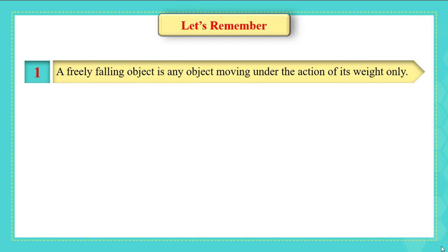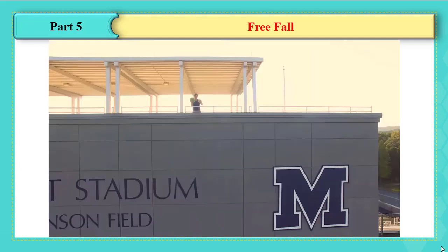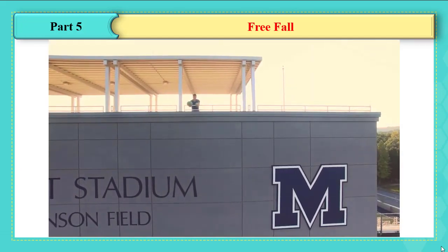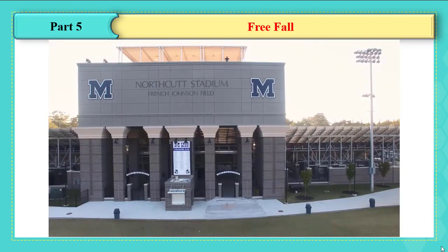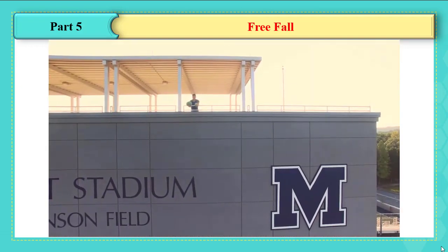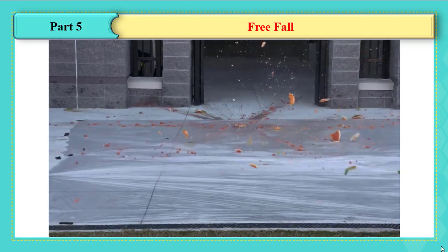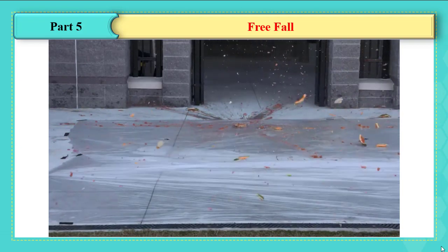Remember from the last video: a free falling object is any object moving under the action of its weight only, and in a freely falling object the motion doesn't depend on the mass or shape of the object. We'll watch a short clip where a man released a watermelon and a cantaloupe to see which reaches the ground first — they reached at the same time, even though air resistance exists.